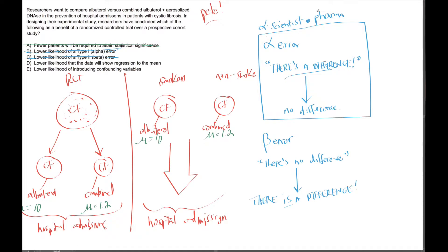All right, guys, we're moving right along here. Let me just clarify from the last video. The alpha error occurs when a scientist or a researcher says, hey, there's a difference when there's really no difference, right?